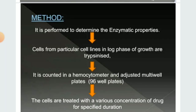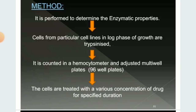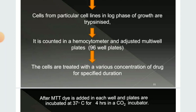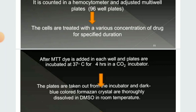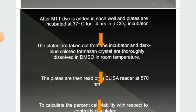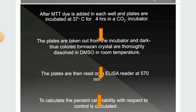The procedure for the tetrazolium salt assay is as follows. First, it is performed to determine enzymatic properties. Second, cells from a particular cell line in the log phase of growth are trypsinized, counted in a hemocytometer, and adjusted into multi-well 96-well plates. The cells are treated with various concentrations of the drug for a specific duration of time. After that, MTT dye is added to each well and the plates are incubated at 37 degrees Celsius for four hours in a CO2 incubator.